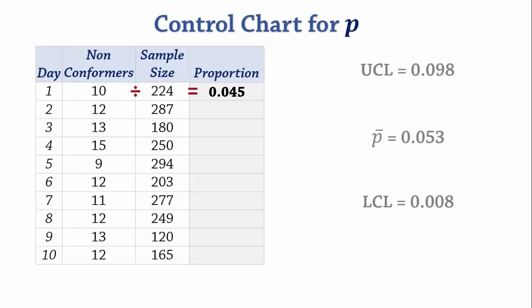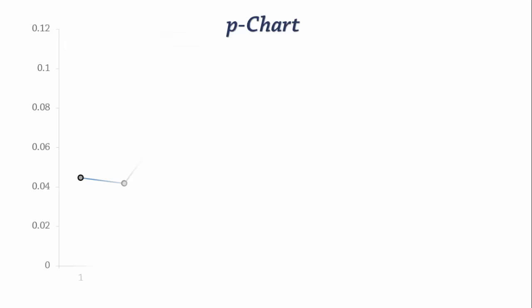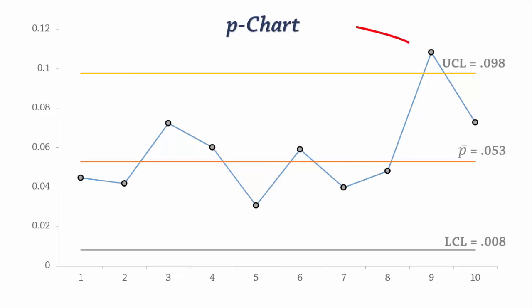Now let's look at the p-chart. We can see here that the proportion of defectives for day 9 is higher than the upper limit. Therefore, the process is out of control. We will recommend checking for the cause of this unusually high value and addressing it.